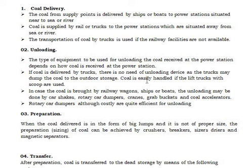Coal delivery: coal from the supply points is delivered by ships or boats to power stations situated near the sea or river, and coal is supplied by rail or trucks to power stations situated away from sea or river. For unloading, the type of equipment depends on how coal is received. If delivered by trucks, there is no need for an unloading device as the truck may dump coal to outdoor storage. If coal is brought by railway wagons, ships, or boats, unloading may be done by car shakers, rotary car drum dumpers, cranes, etc.